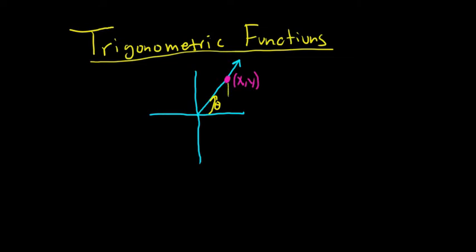And so now we can draw a triangle. So this here is y, that's the distance there, that's the height. And this distance here is x. And then we'll call this distance here from the origin to the point, we'll call that r.